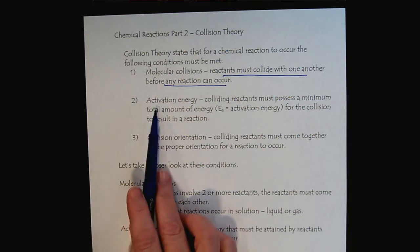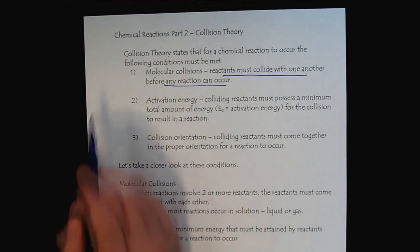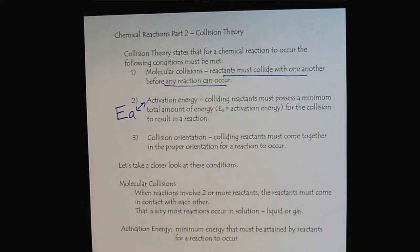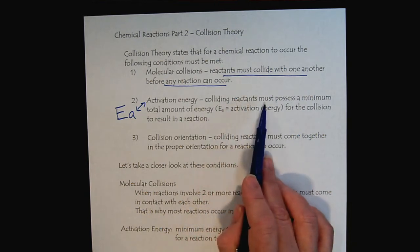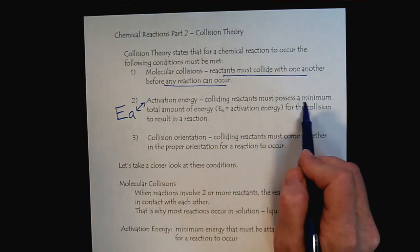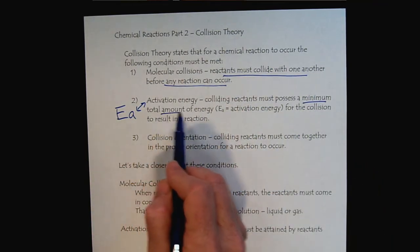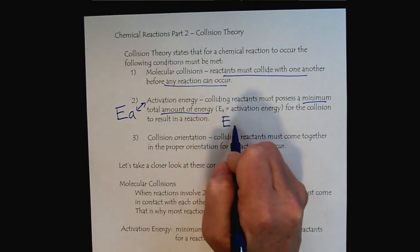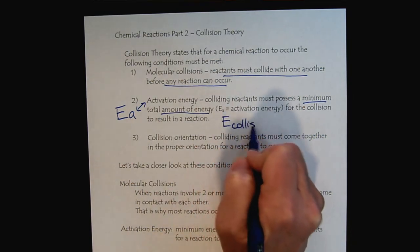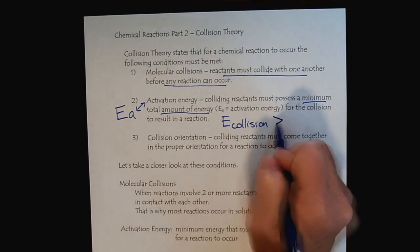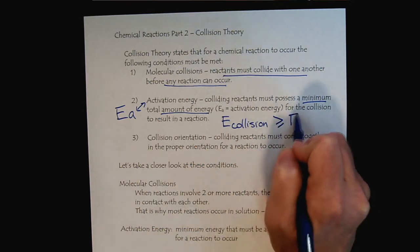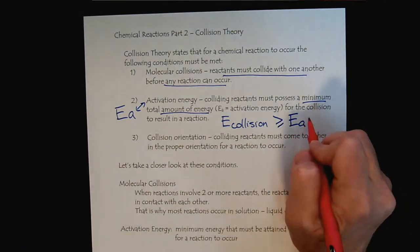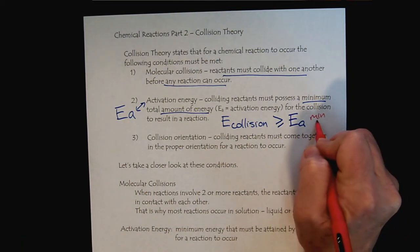Secondly, they have to have enough activation energy. Activation energy we will symbolize E sub A. So not only do they have to collide, the reactants have to have a minimum total energy. The energy of the collision must be greater than or equal to the activation energy, which you can think of as that minimum energy.